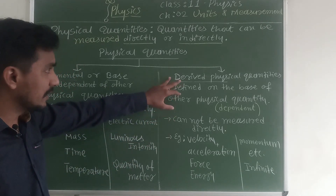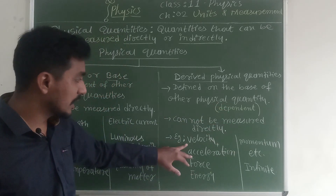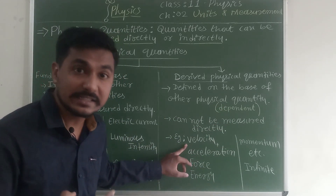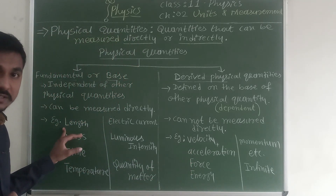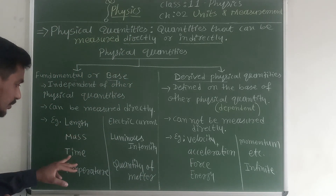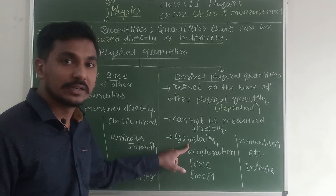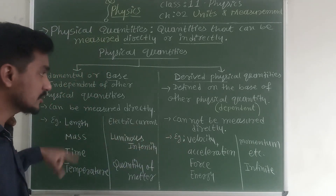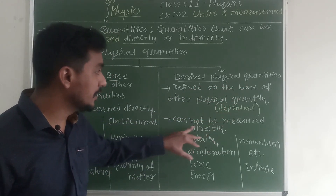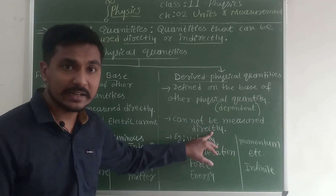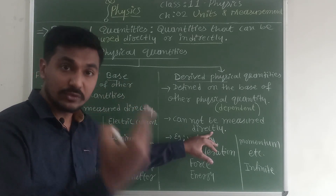Derived physical quantities are defined on the basis of other physical quantities. For example, if I want to define velocity, I need displacement and time. Displacement means the shortest path, so I need length and time — two quantities to define velocity. You cannot measure velocity directly. You need displacement and time, meaning you need two fundamental quantities to define velocity.